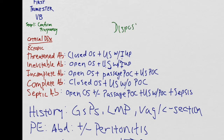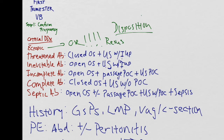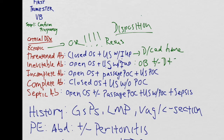Now let's talk about disposition. For ectopic pregnancy, the patient should go straight to the operating room — resuscitate aggressively with blood, but do not delay getting this patient to the OR. If the patient has a threatened abortion, they can be discharged home. If the diagnosis is an inevitable abortion, OBGYN can be consulted and the patient can be scheduled for a D&C if necessary. The same applies to an incomplete abortion. If the patient had a complete abortion, there is not much to do, so the patient can be discharged home.